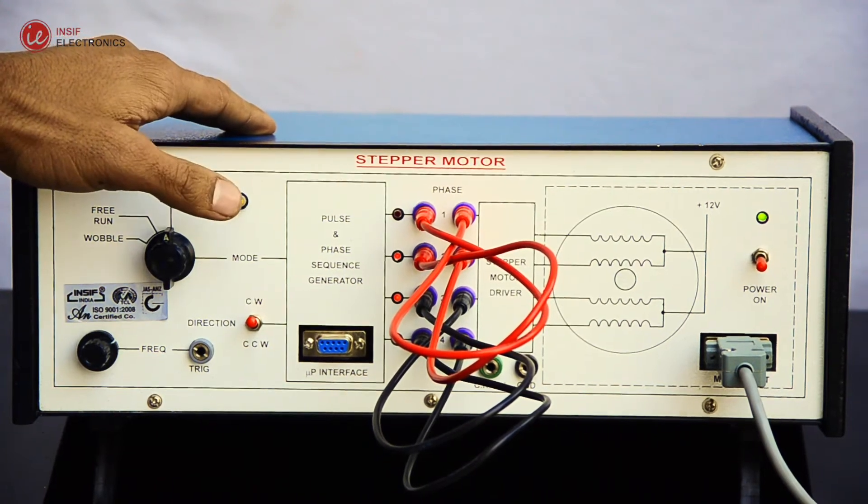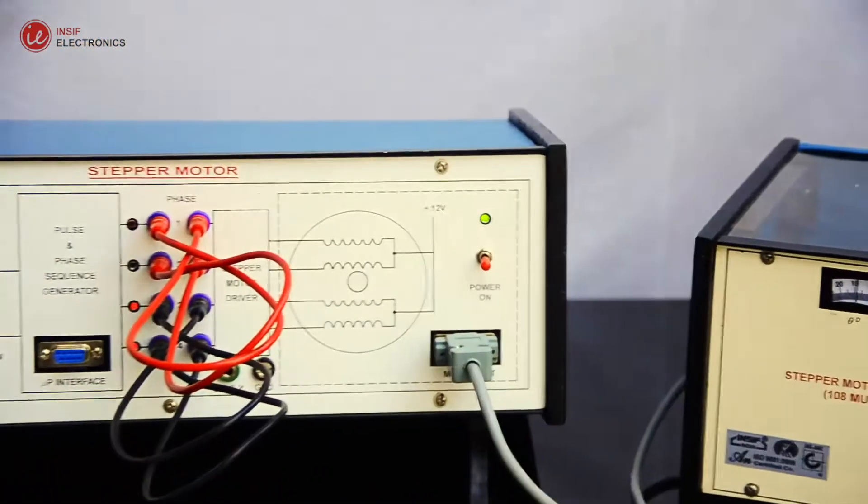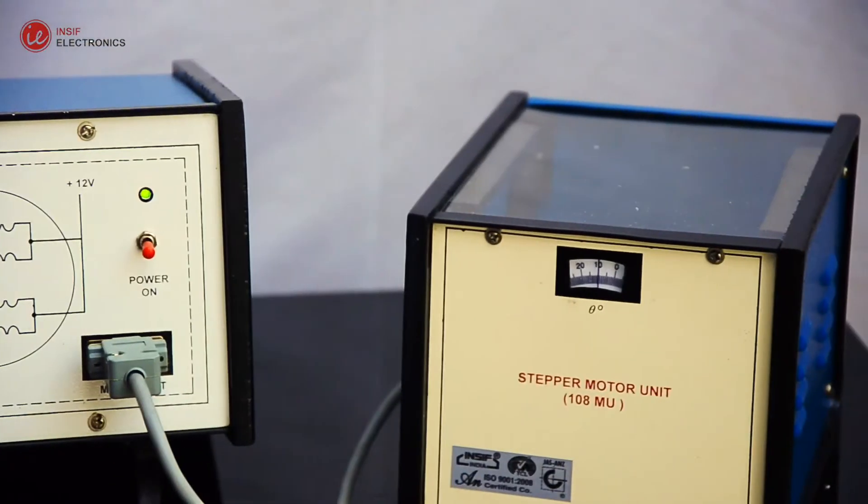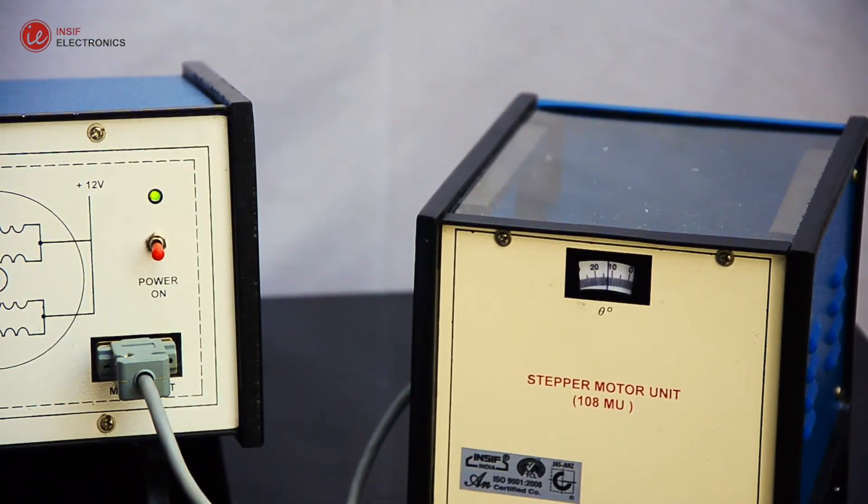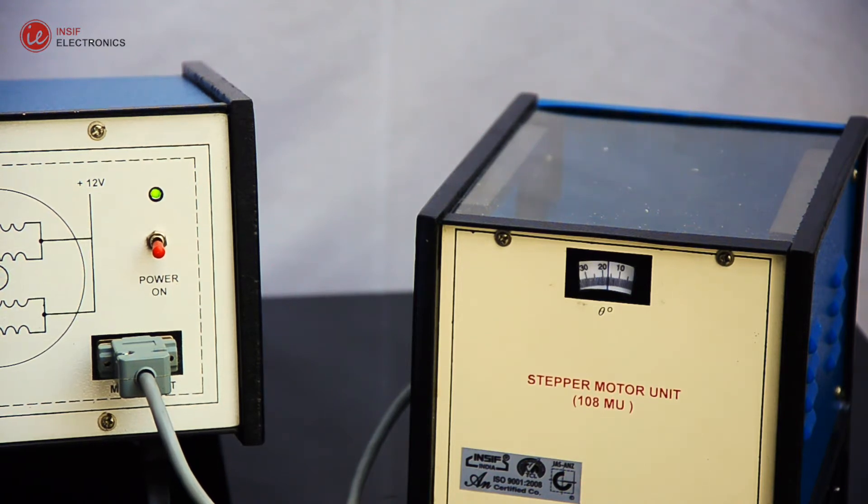Press the step key for 10 or 20 times, making a delay of 1 second between 2 steps, and note the position of the dial. Calculate the step angle as displacement in degrees divided by number of keystrokes or pulse steps.